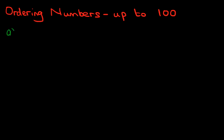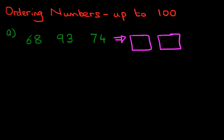So let's work through our first example. Suppose you have these three numbers: 68, 93, and 74. What the question says is, let's put the boxes in first. There are three numbers, so we're going to put down three boxes. And the question is, you have to reorder the numbers from the smallest to the largest number.